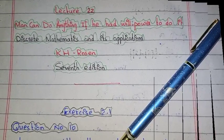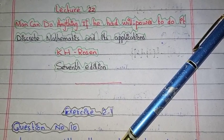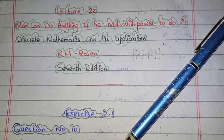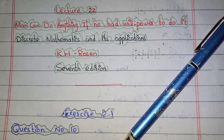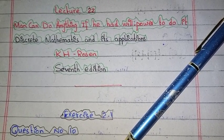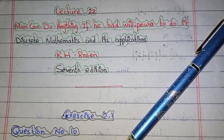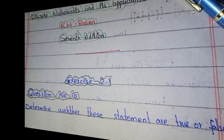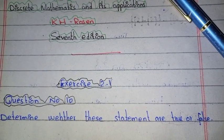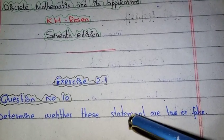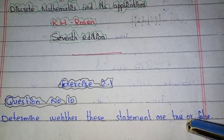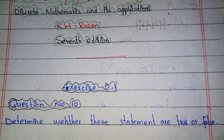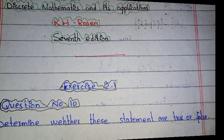Hello everyone. Today is our lecture number 22, Discrete Mathematics and Its Applications, K.H. Rosen's book 7th edition, Exercise 2.1, Question number 10. We have to determine whether these statements are true or false.